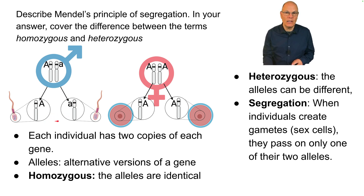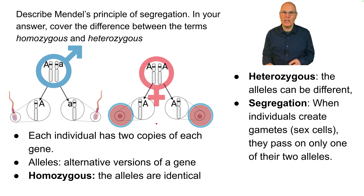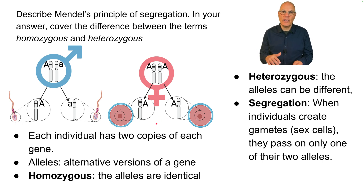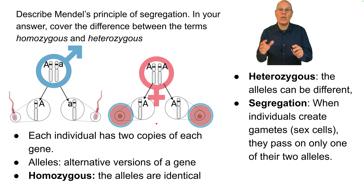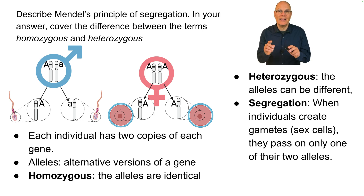Here, segregation is happening in the formation of sperm, and here in the formation of eggs. If you feel that this corresponds to the events of meiosis, you're onto something — and we'll talk about that later.